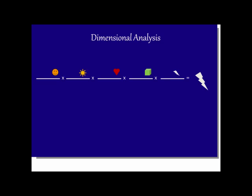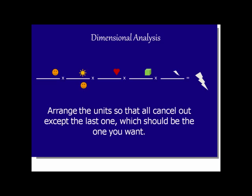So we're going to put the smiley face in the denominator of our first conversion factor. We're going to put the sun in the denominator of our next conversion factor. We're going to put the heart in the denominator of our third conversion factor. And we're going to put the cube in the denominator of our last conversion factor. So by having this arrangement, all the units are going to cancel out except for the last one. And that should be the unit we want in our final answer.